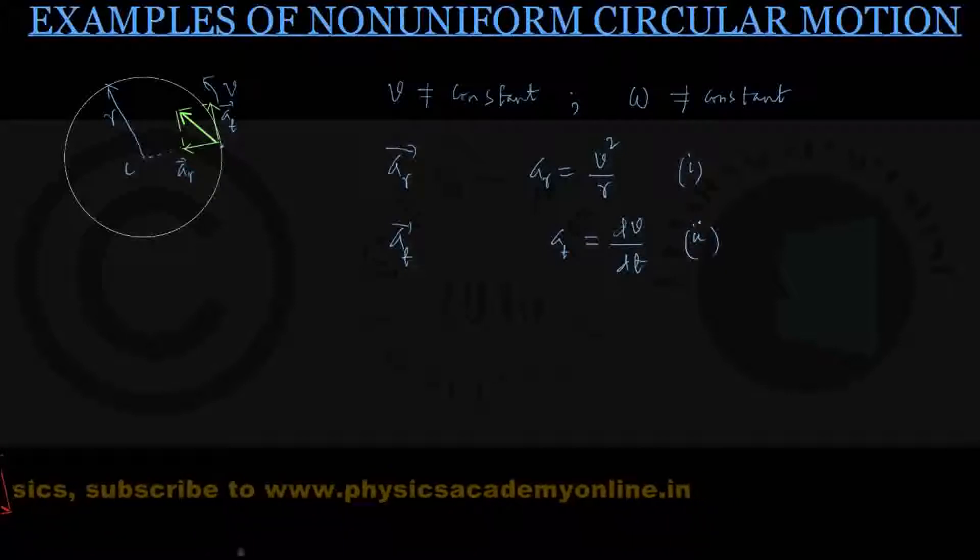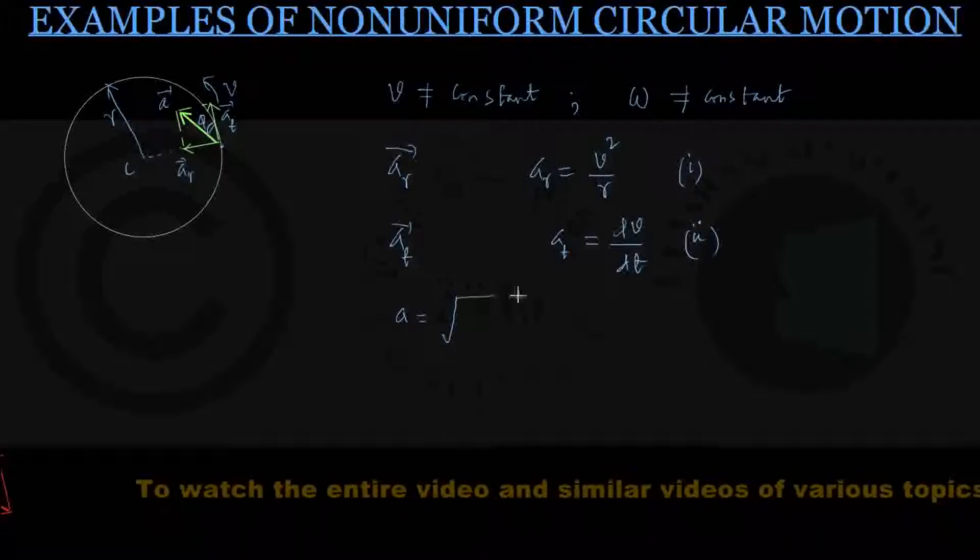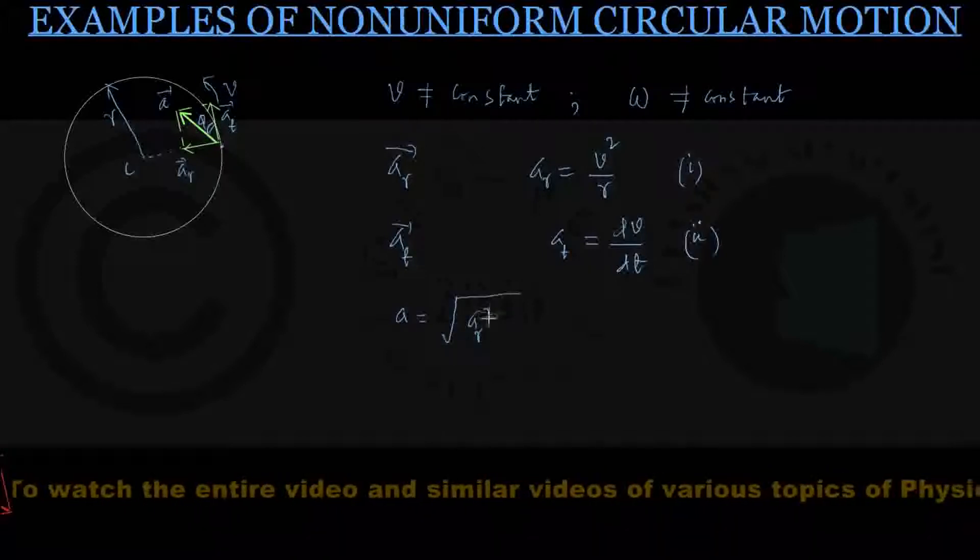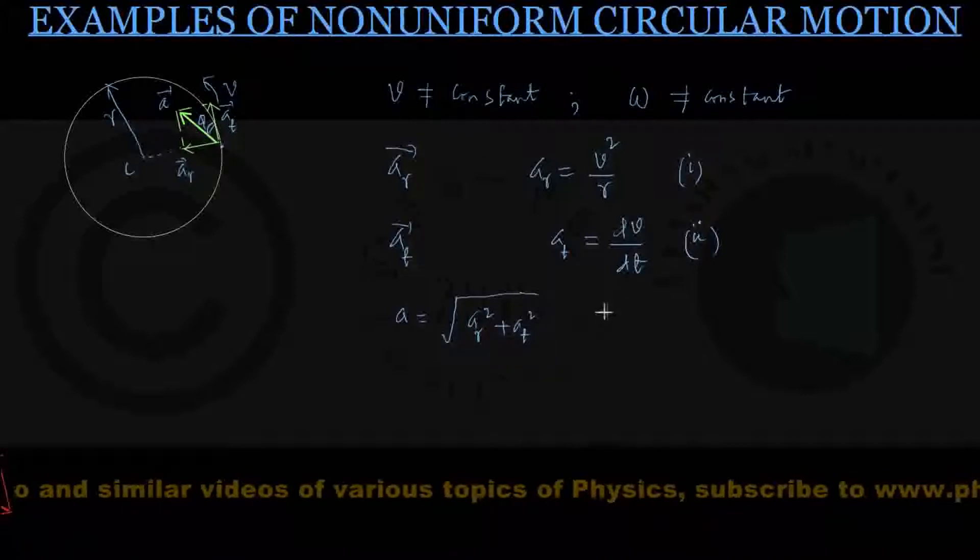So while the particle possesses two accelerations simultaneously, one is AR centripetal acceleration, and one is AT tangential acceleration, their resultant is given by the vector summation method, parallelogram law, that gives us total acceleration to be A. And this makes an angle of phi with the tangential direction. We also know that this A is given by, magnitude wise, square root of AR square plus AT square. This is my formula number 3.